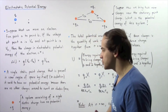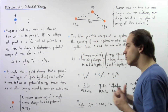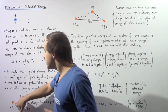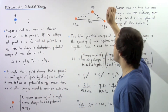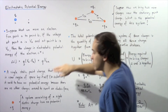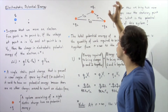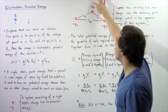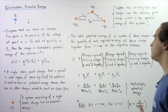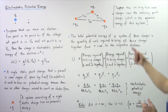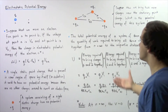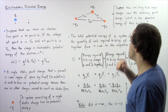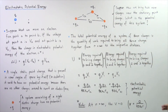Now let's take this stationary point charge and name it positive Q1, so this point charge has a quantity of charge given by positive Q1. Now let's suppose we bring two more electric charges near this stationary point charge Q1.